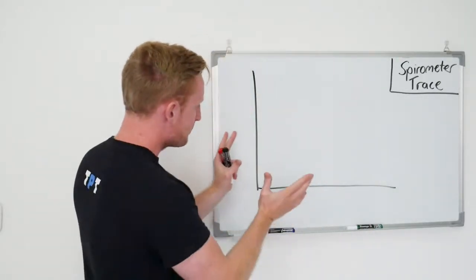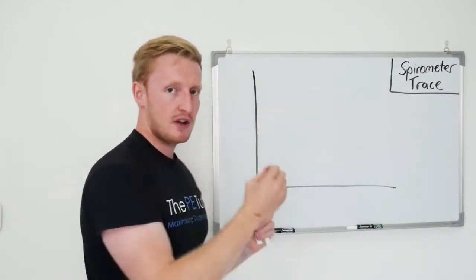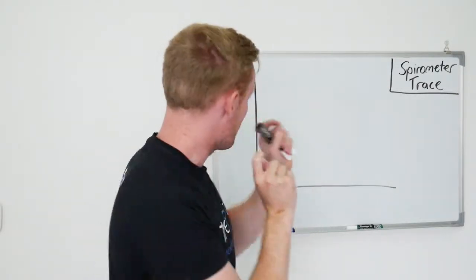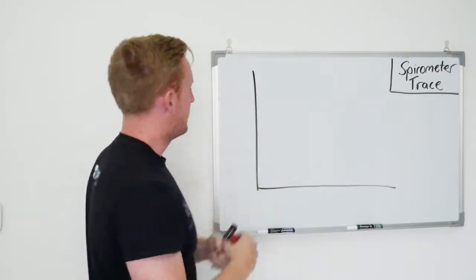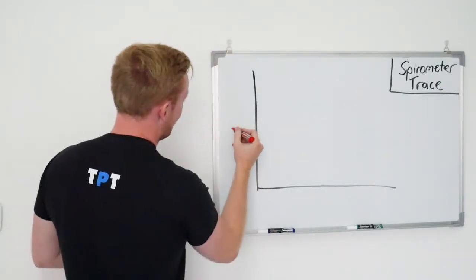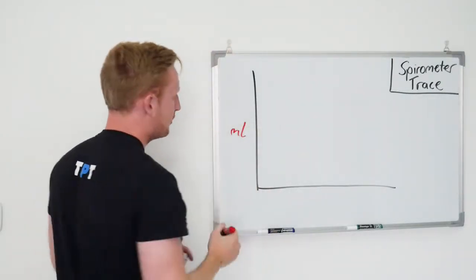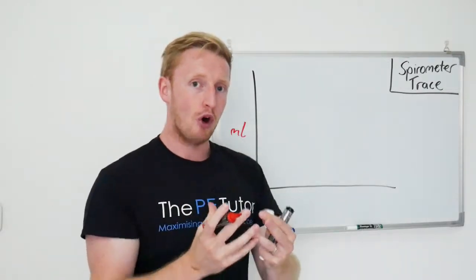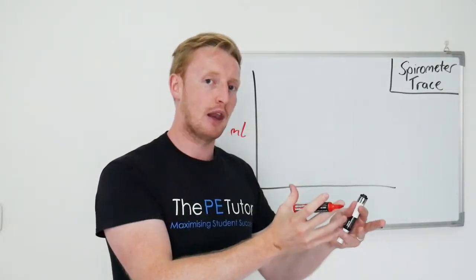To start with, we've got the graph that the spirometer trace is drawn onto, and what I want to talk about first is what they represent. We've got milliliters or liters up on this side because we're talking about the volume of air that's actually inside the lungs.